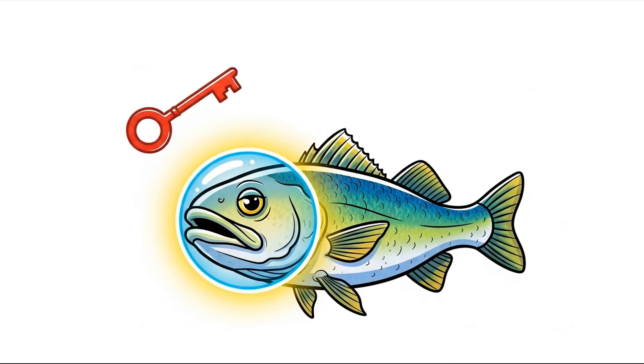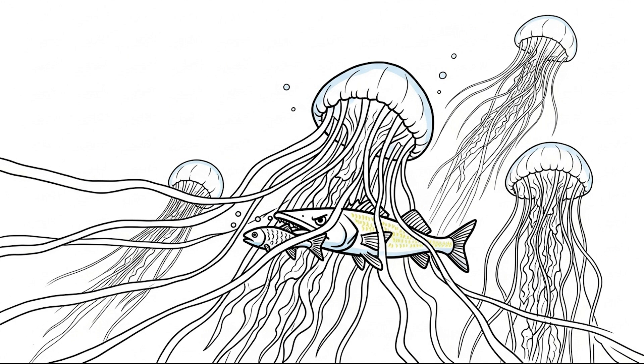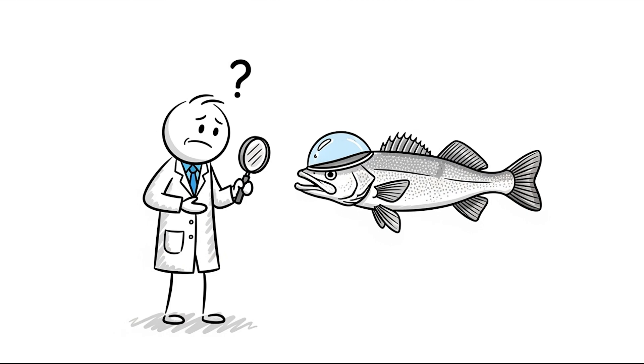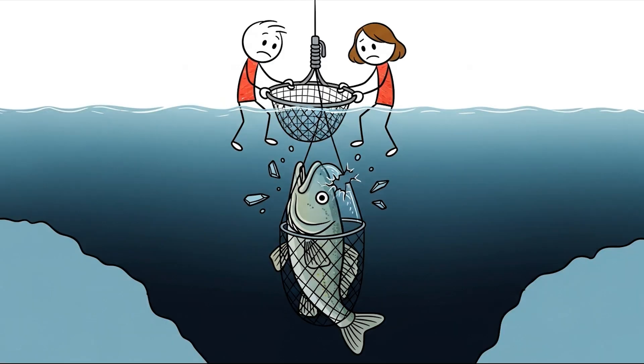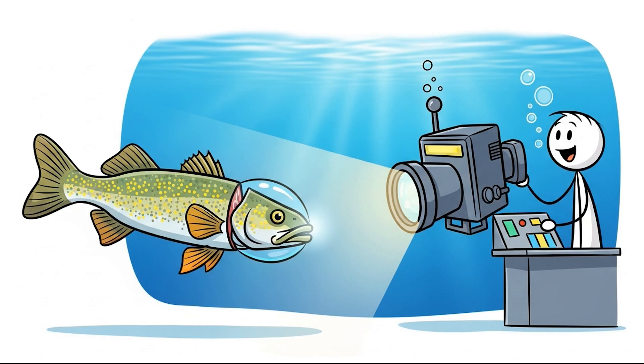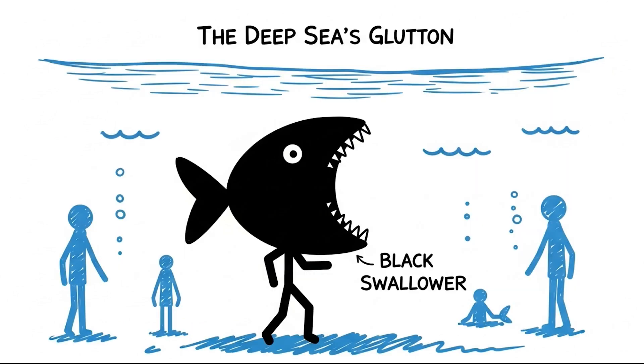Its transparent head is key to its survival. It can sneak past the stinging tentacles of jellyfish chains to steal their meals, completely undetected. For a long time, scientists didn't even know about its clear dome. When they first brought these fish up from the deep, the pressure changes always caused the dome to get smashed. It wasn't until they could study them with advanced underwater cameras that the true marvel of their glassheads was revealed.